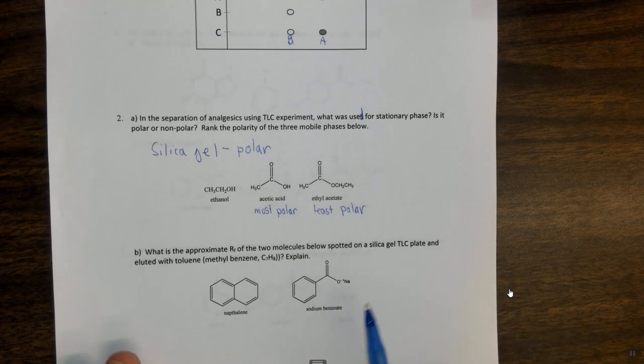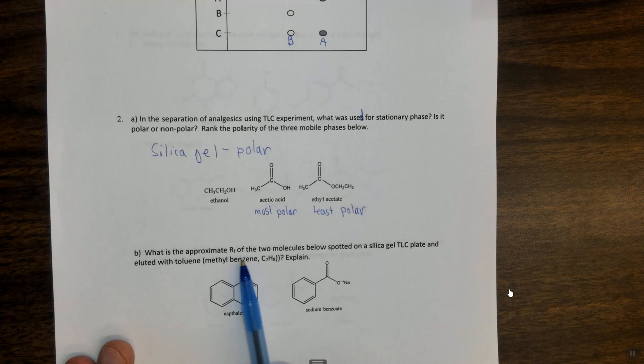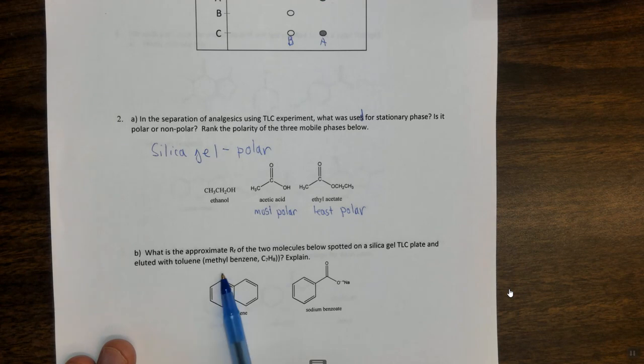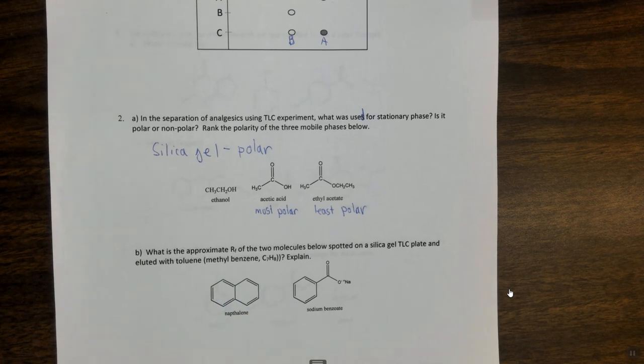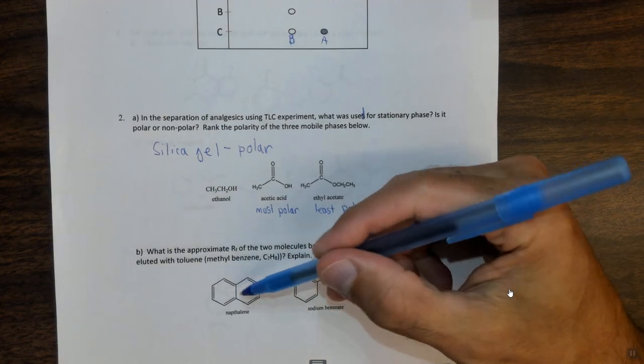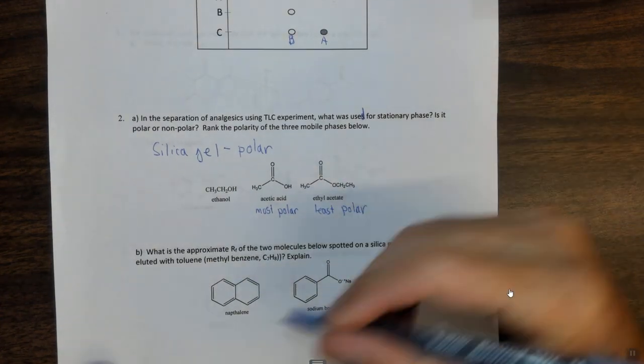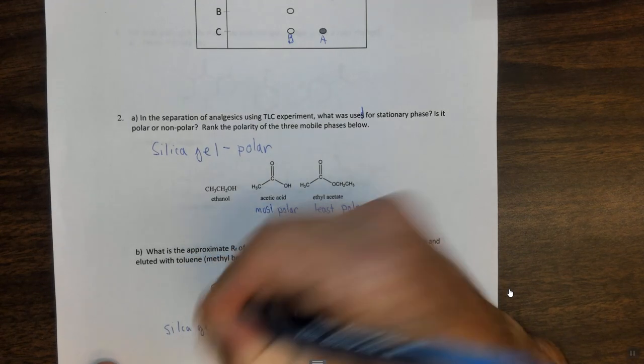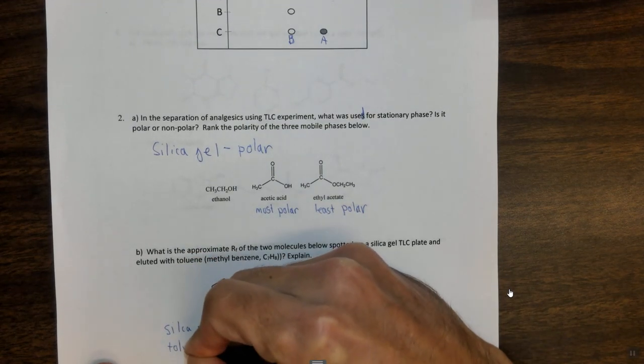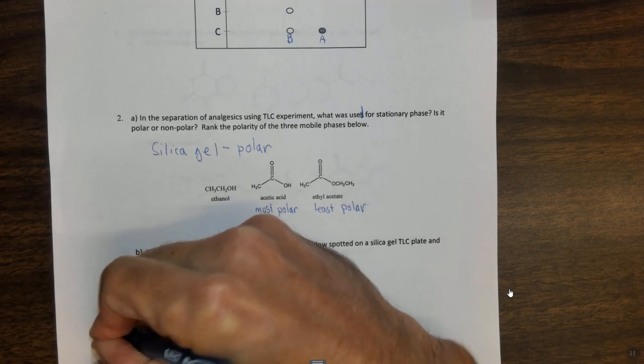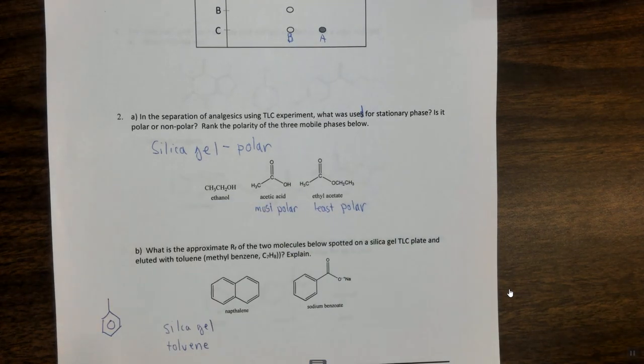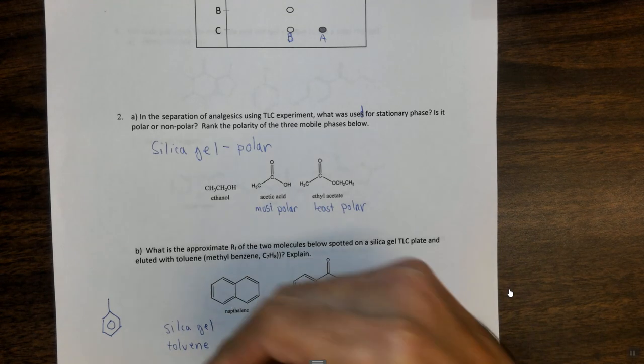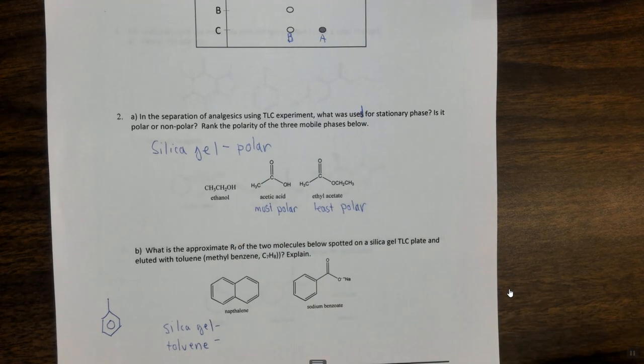Part B, which also has to do with TLC. It says, what is the approximate RF value of the two molecules below spotted on a silica gel TLC plate and eluted with toluene? Toluene is methyl benzene. So we have naphthalene as our first. Let's look at its affinity for silica gel and its affinity for toluene, which again is methyl benzene. So this is benzene and that's a methyl group. These are the two molecules it could potentially interact with.